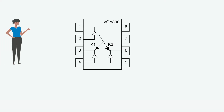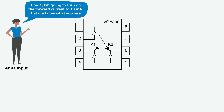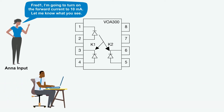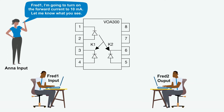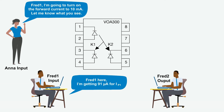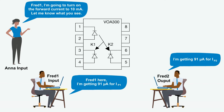To help understand this better, let's look at this cartoon. We have Anna as an input who turns on the input current of the infrared emitter to 10 mA, and she would like to know what FRED1 is seeing. FRED1 and FRED2 are exactly the same. FRED1 replies that he is getting 91 microamps, and FRED2 is also getting 91 microamps. They don't know they have the exact same reading, but since they are matched, they do see the same current reading.